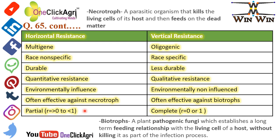A necrotroph is a parasitic organism that kills the living cells of the host and then feeds on the dead matter. A biotroph is a plant pathogenic fungus that establishes a long-term feeding relationship with the living cells of a host without killing them as part of the infection process. The key difference: necrotrophs kill living cells and feed on dead matter, while biotrophs feed on living cells without killing them.